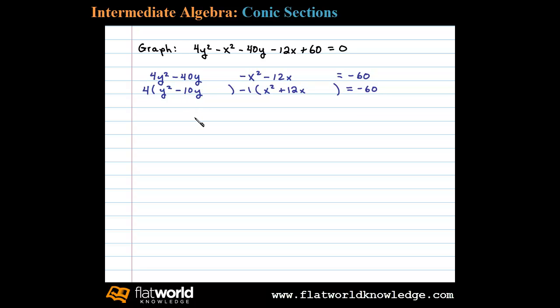Now we can complete the square with (b/2)². In this case, b is -10, so (-10/2)² = (-5)² = 25. We'll add 25 here, and then to balance the equation, we'll add 100 on the right side (that's 4 times 25).